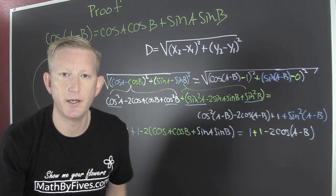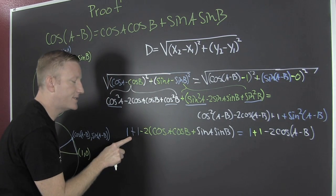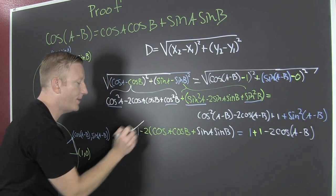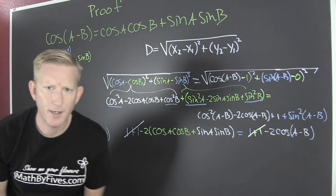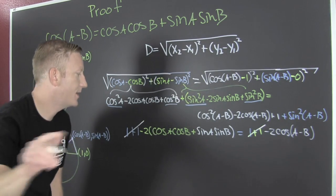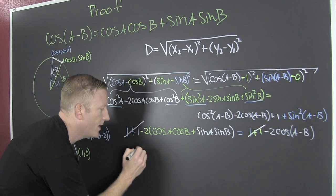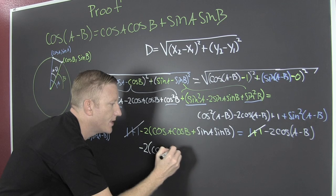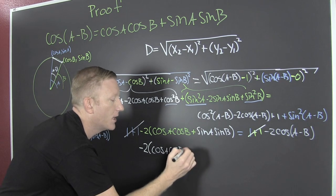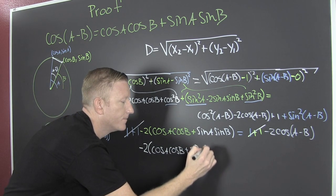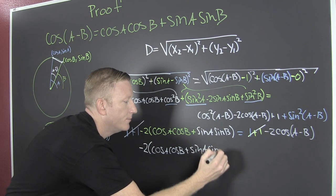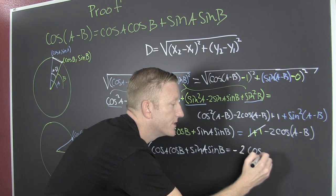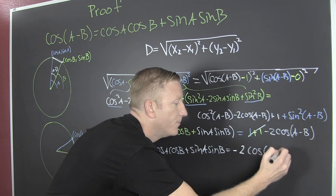Now I'm going to collect like terms. That's two there. That's two there. So if I have two on each side, then I can just rid myself of those twos. Just think about linear equations. Let me write what I have now. I have minus two times the cosine A cosine B plus sine A sine B. That's going to be equal to minus two times the cosine of A minus B.